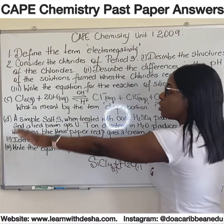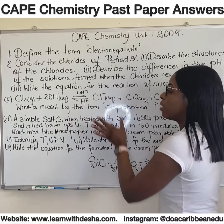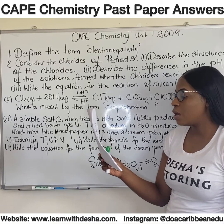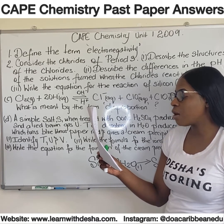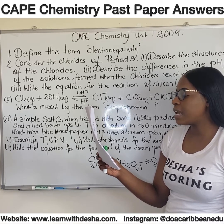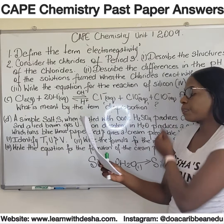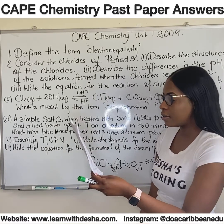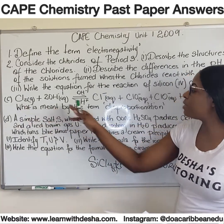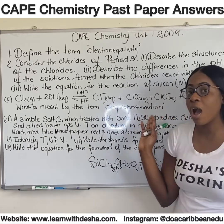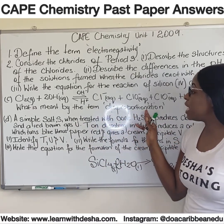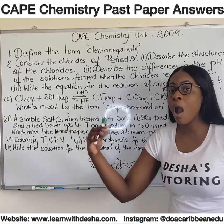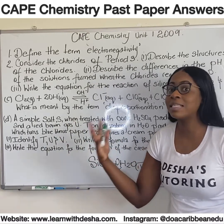Moving on to part C, which shows us an equation. Chlorine forms a colorless solution P when dissolved in cold sodium hydroxide. This reaction is referred to as a disproportionation reaction. The first question asks: what is meant by the term disproportionation? A disproportionation reaction is a reaction in which a single element is being oxidized and reduced simultaneously.